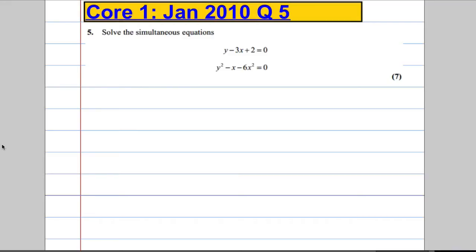So question 5, we're asked to solve the simultaneous equation. We can see that one of the equations is linear and the other one is non-linear because we've got these squared terms. So what we're going to have to do is solve this via substitution. Generally we sub the line into the higher order function.